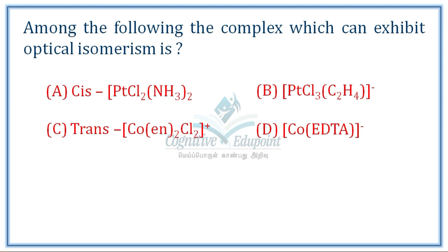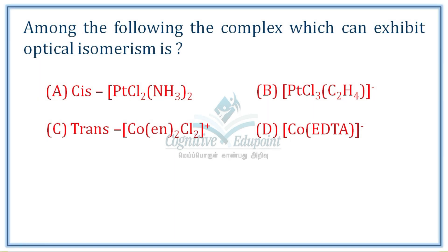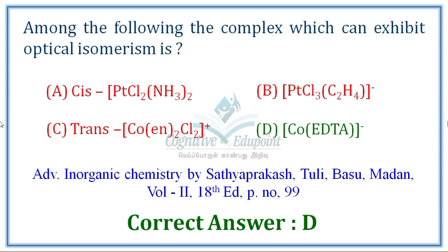Next question: optical isomerism — which complex can exhibit optical isomerism? Platinum complexes are ruled out. Trans-cobalt-ethylenediamine-Cl2 has a plane of symmetry. A very good example of optical activity is cobalt-EDTA, since EDTA is a hexadentate unsymmetrical ligand, making it optically active. Correct answer is D.